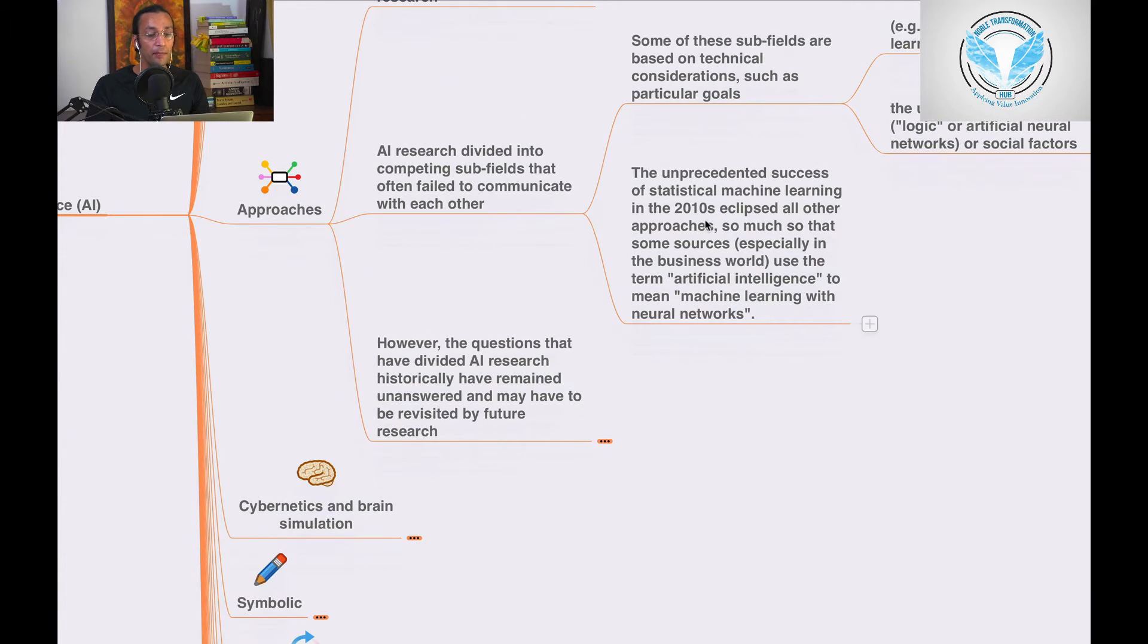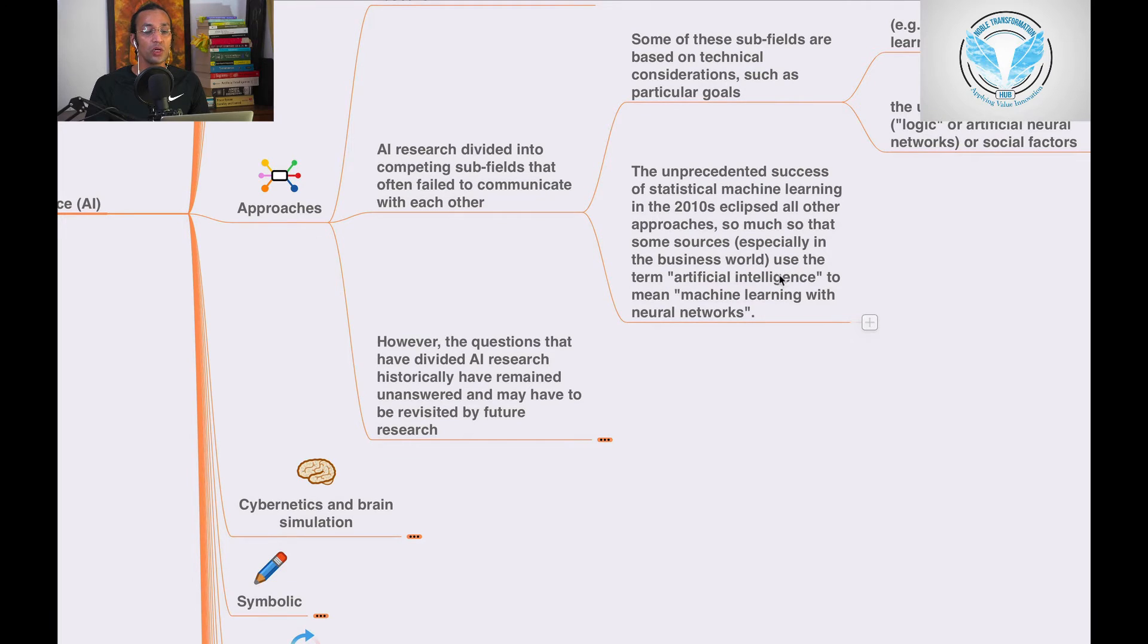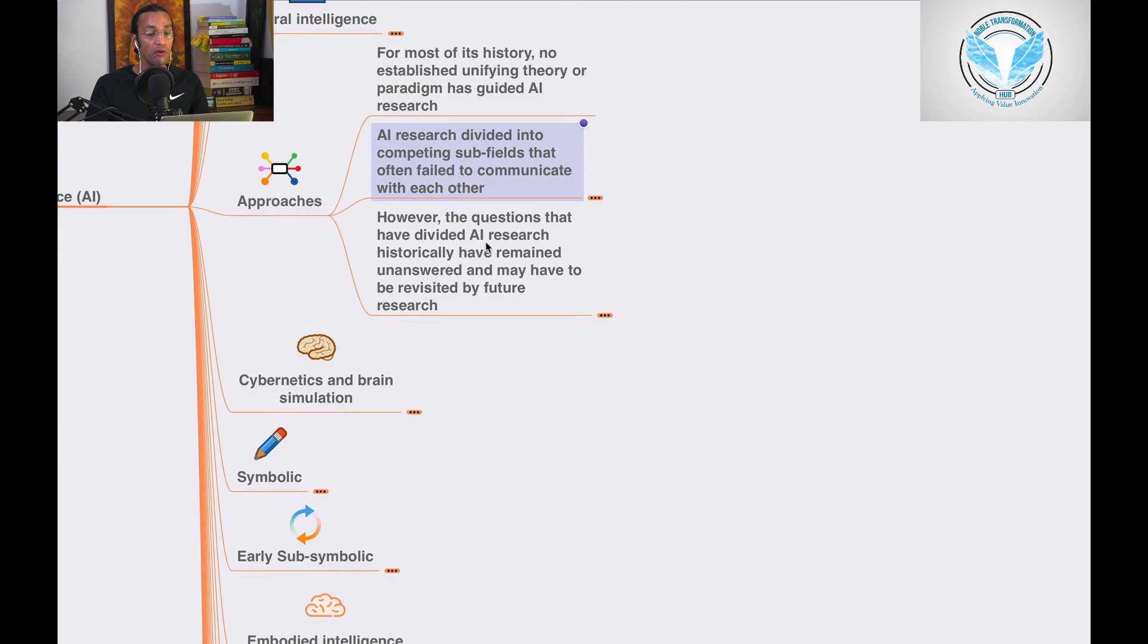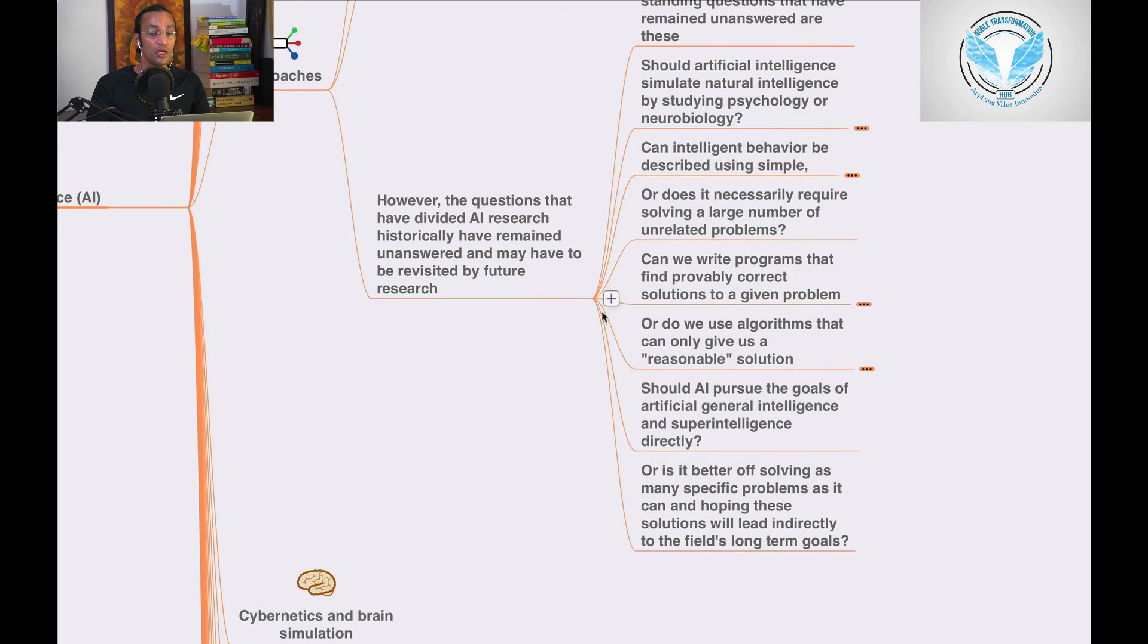The unprecedented success of statistical machine learning in the 2010s eclipsed all other approaches so much that some sources, especially in the business world, use the term artificial intelligence to mean machine learning with neural networks. However, the questions that have divided AI researchers theoretically have remained unanswered and may have to be revisited by future research.